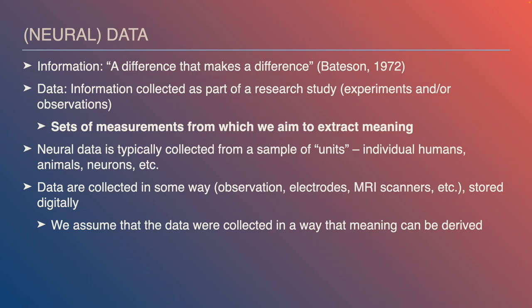When we talk about data and neural data, information can be defined as a difference that makes a difference — news of a difference, going back to Gregory Bateson 1972. Data is information collected typically as part of a research study. Within this course, we're talking about information collected as part of a formal research study — either experiments, where we systematically manipulate variables and look at outcomes, or observations, where we observe brain activity or behavior in less constrained environments. Ultimately, our data are a set of measurements from which we aim to extract meaning.